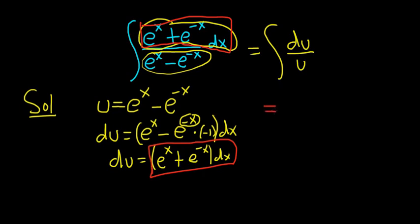Whenever you have du over u, the formula says that you get the natural log of the absolute value of u plus our arbitrary constant of integration, capital C.